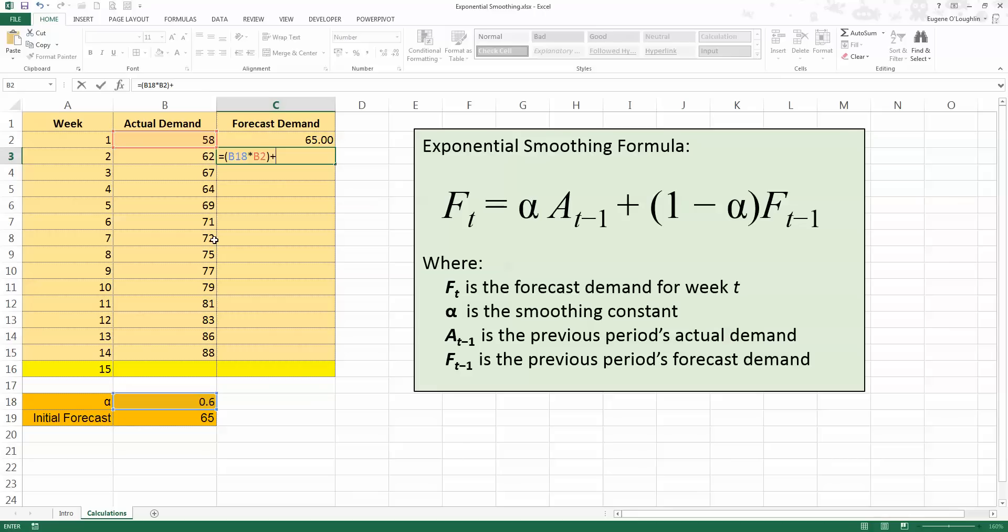Multiply that then by the previous actual demand, t minus 1, so that's going to be B2, the value of 58 for the actual demand for the previous period. Closing bracket, and you can see I need to plus or add that to, and I need two brackets next for the second part of the calculation. So 1 minus the alpha value, so again I'm going to click on cell B18. Closing bracket, and multiply that then by F_t minus 1, and that's going to be the value for the previous forecast, which is 65, and press the closing bracket. And that's going to give me a forecasted demand in week 2 for 60.8 products.